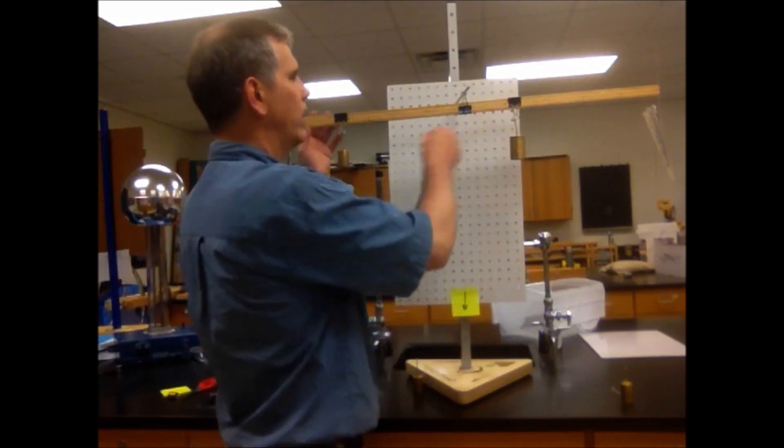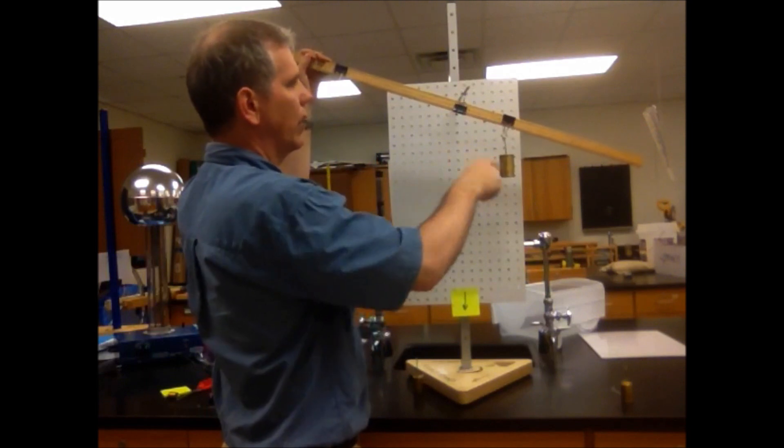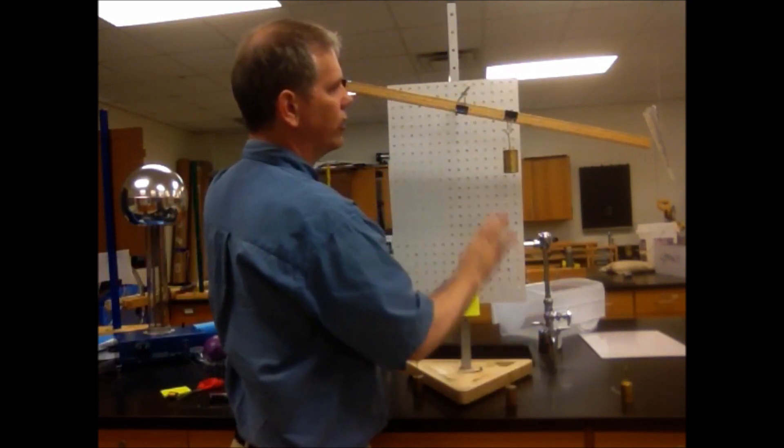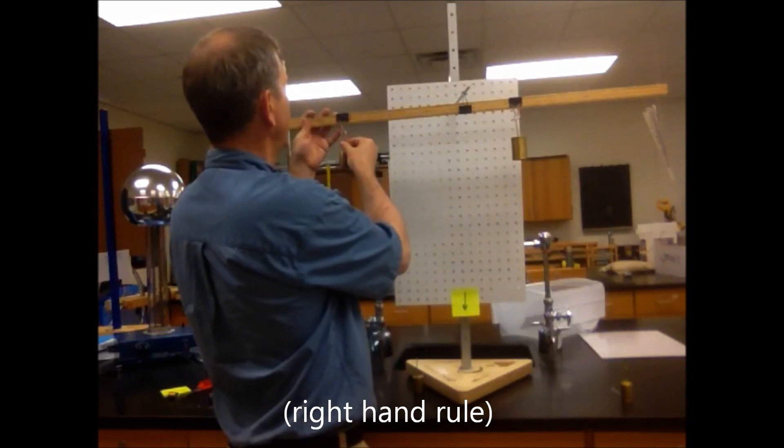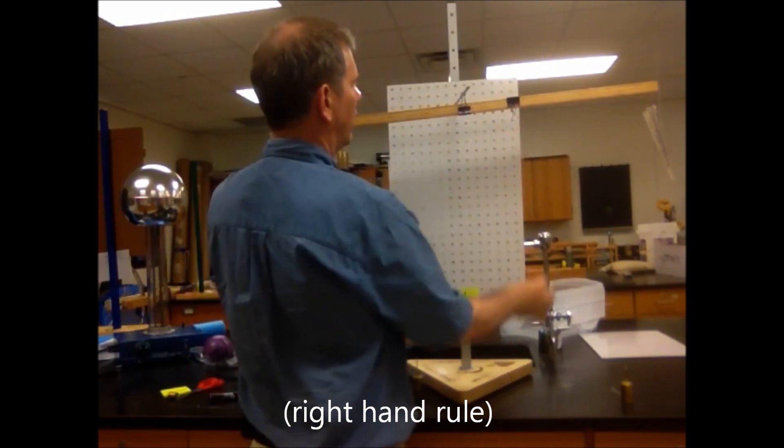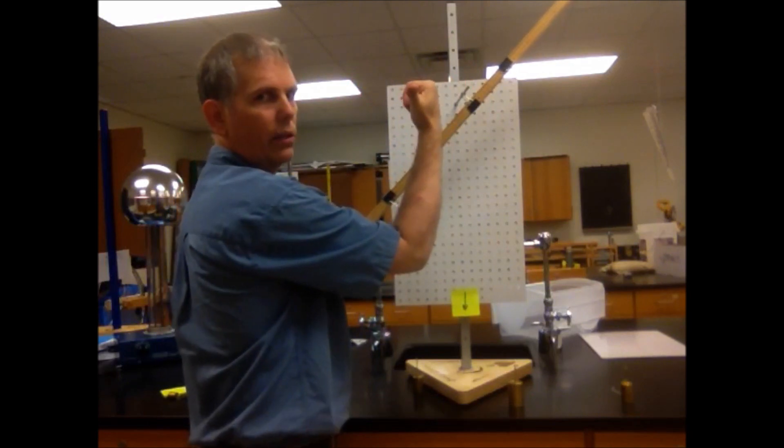We call this torque. This one will rotate it that direction if I take this mass off. We call that clockwise or a negative torque. This side over here is a positive torque. If I take that one off, again, it rotates this direction, which is a positive torque.